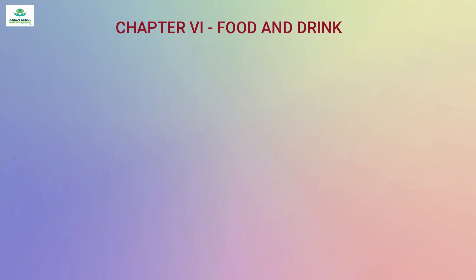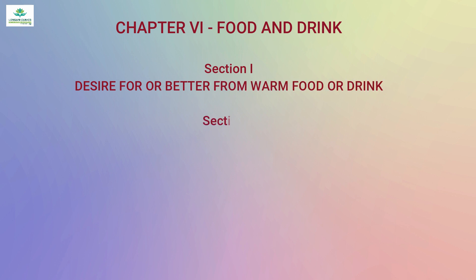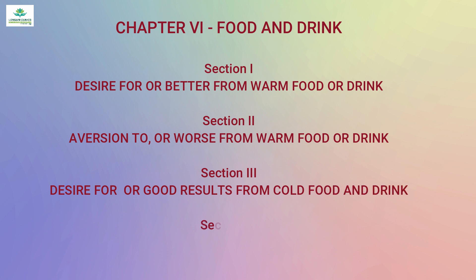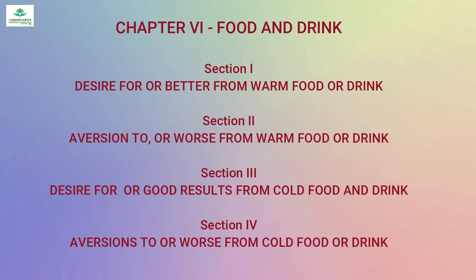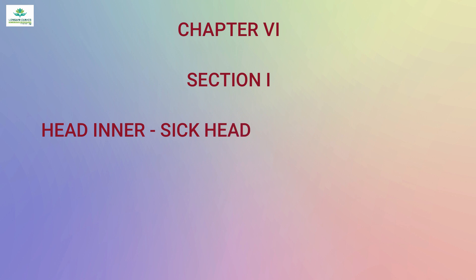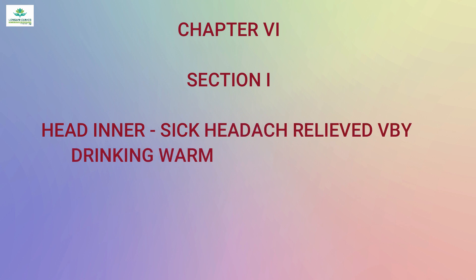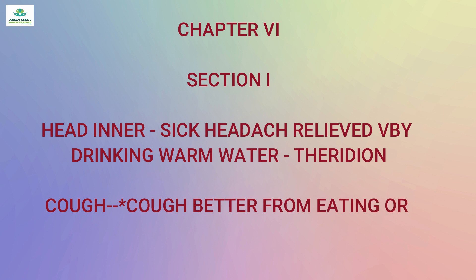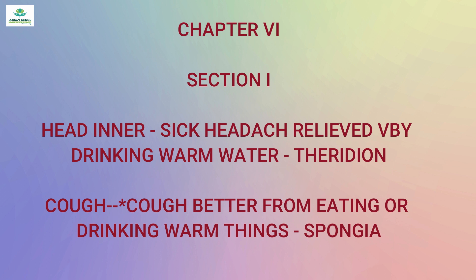Chapter 6 is 'Food and Drink,' with four sections: Section 1 — desire for or better from warm food or drink; Section 2 — aversion to or worse from warm food or drink; Section 3 — desire for or good results from cold food and drink; Section 4 — aversion to or worse from cold food or drink. Rubric examples: 'Sick headache relieved by drinking warm water' — Theridion; 'Cough better from eating or drinking warm things' — Spongia.